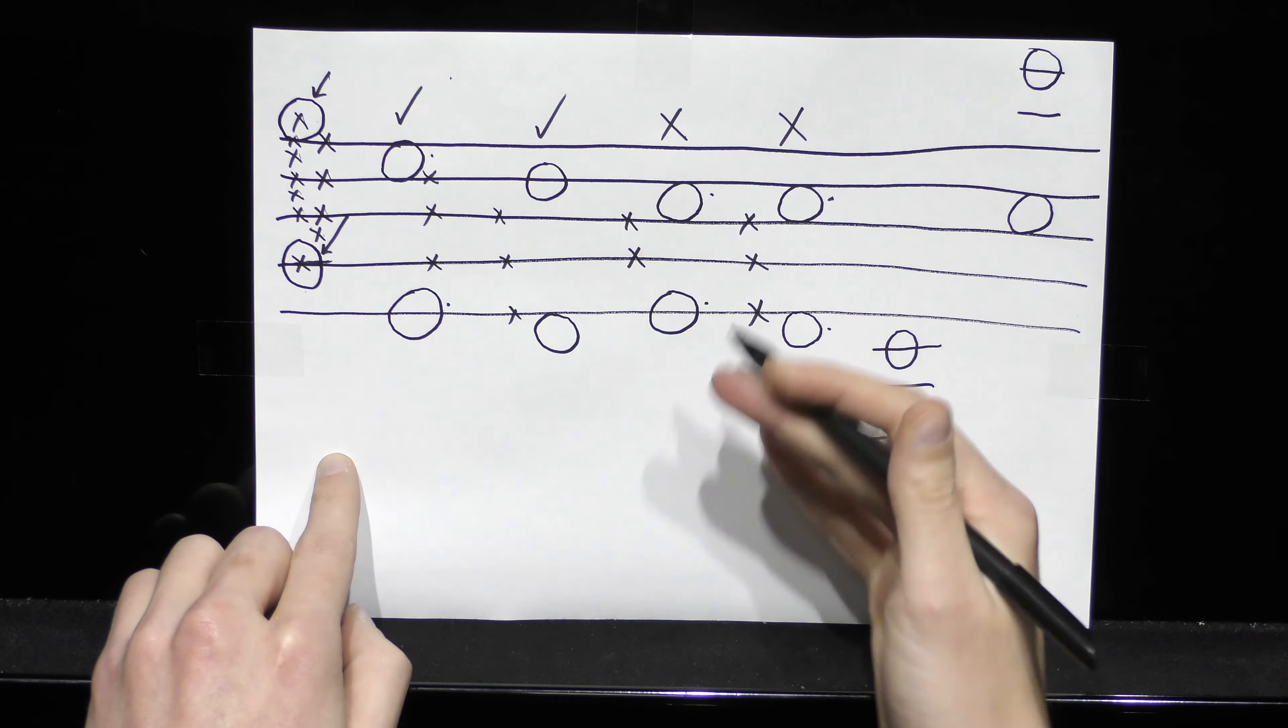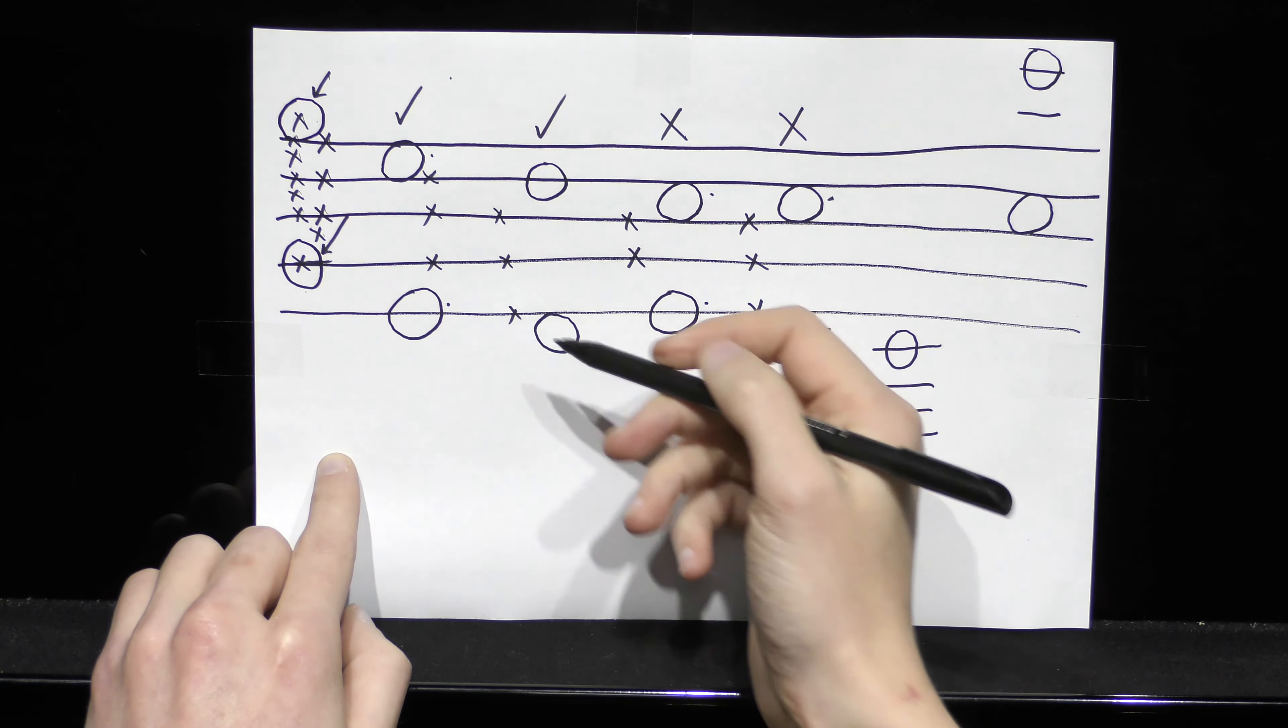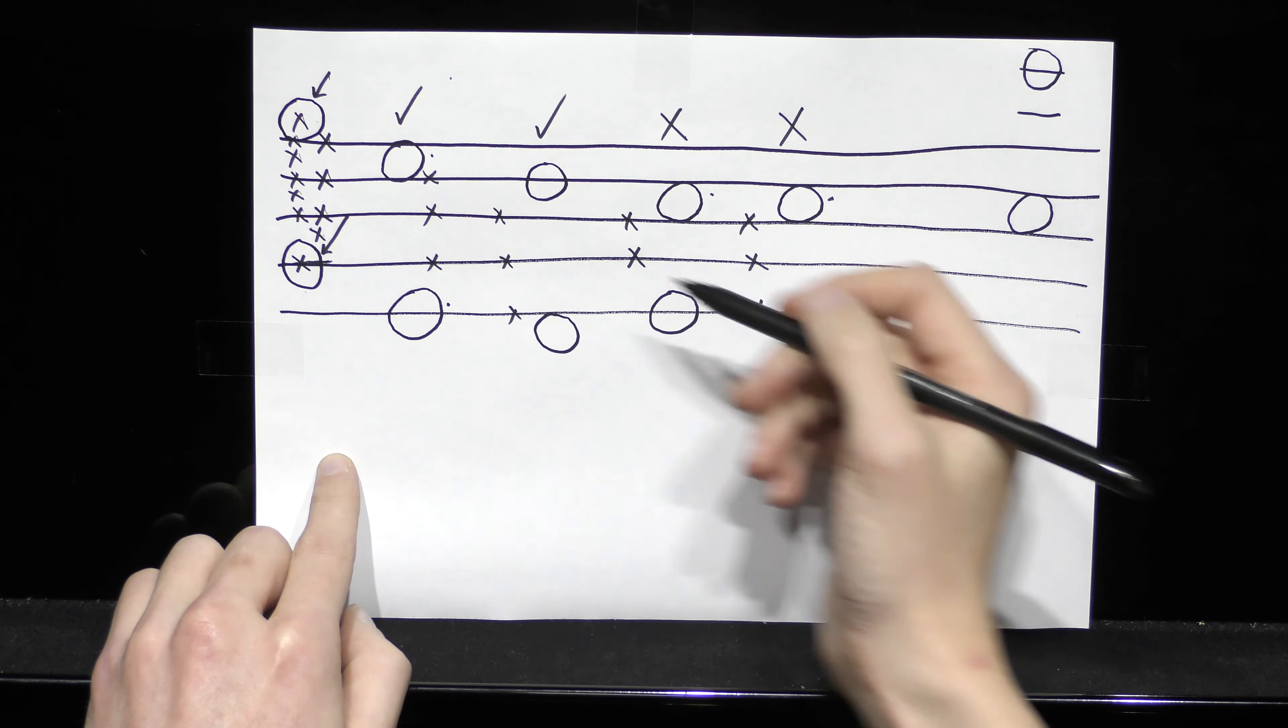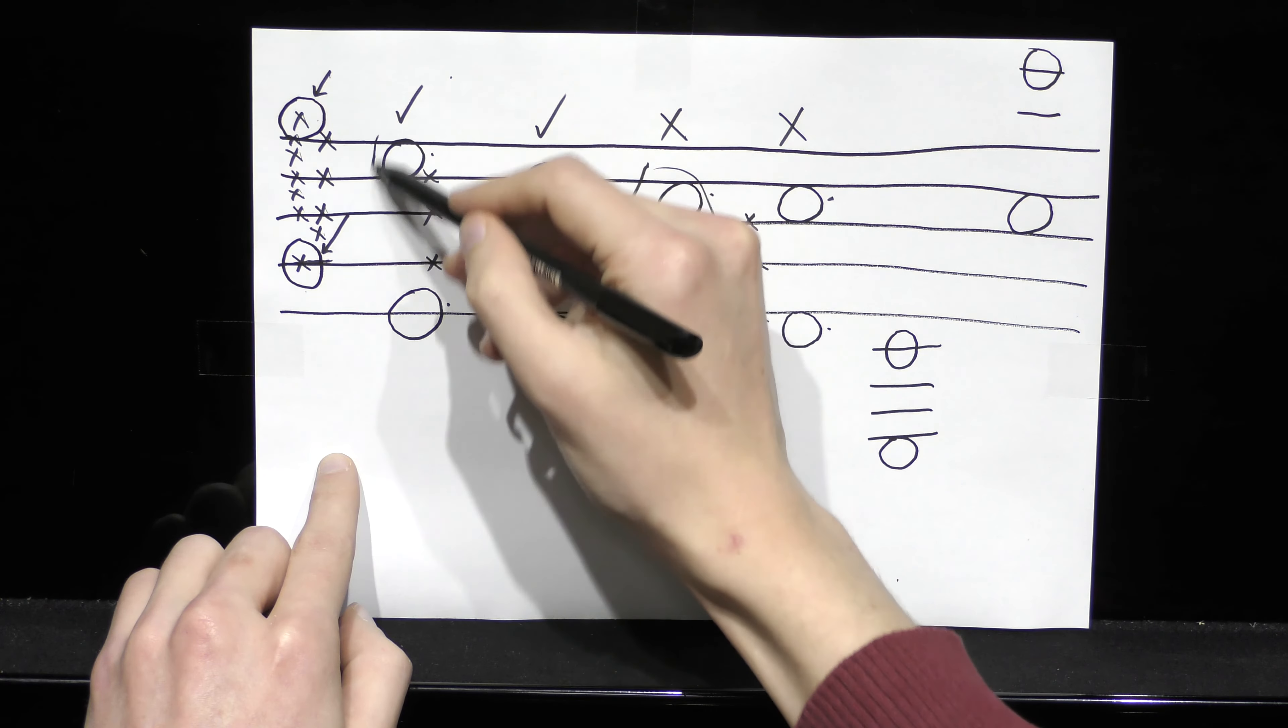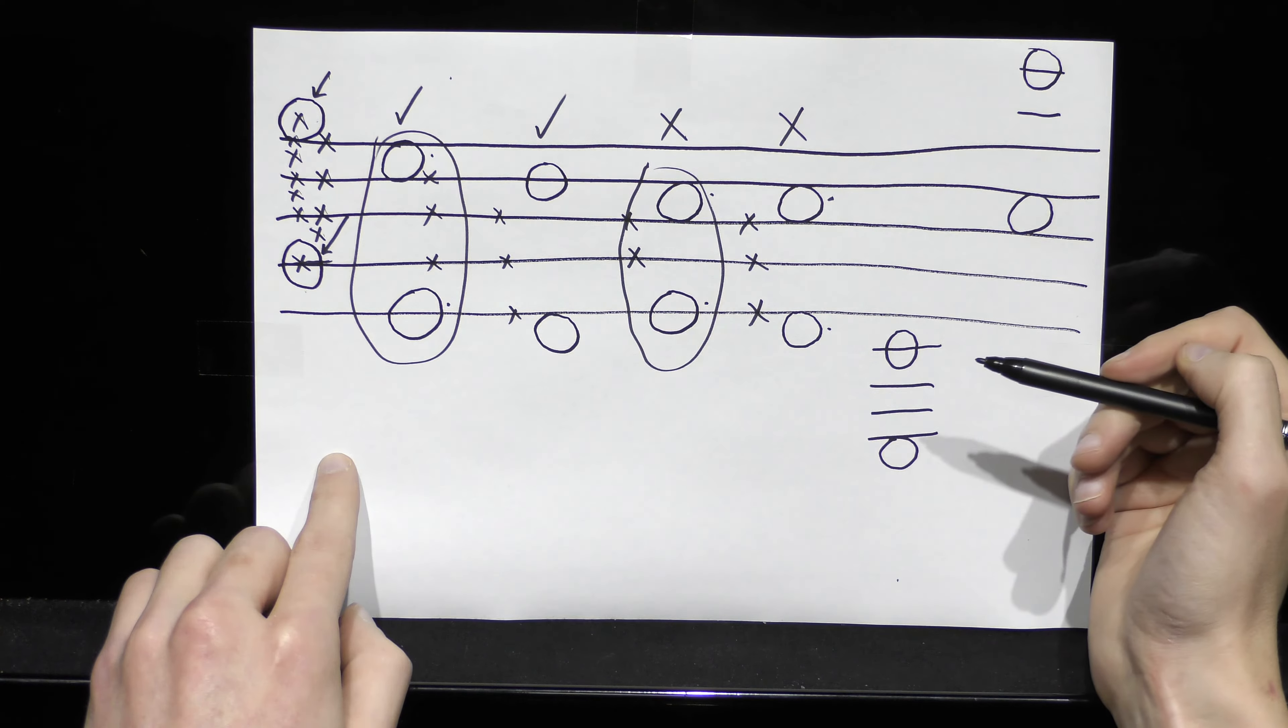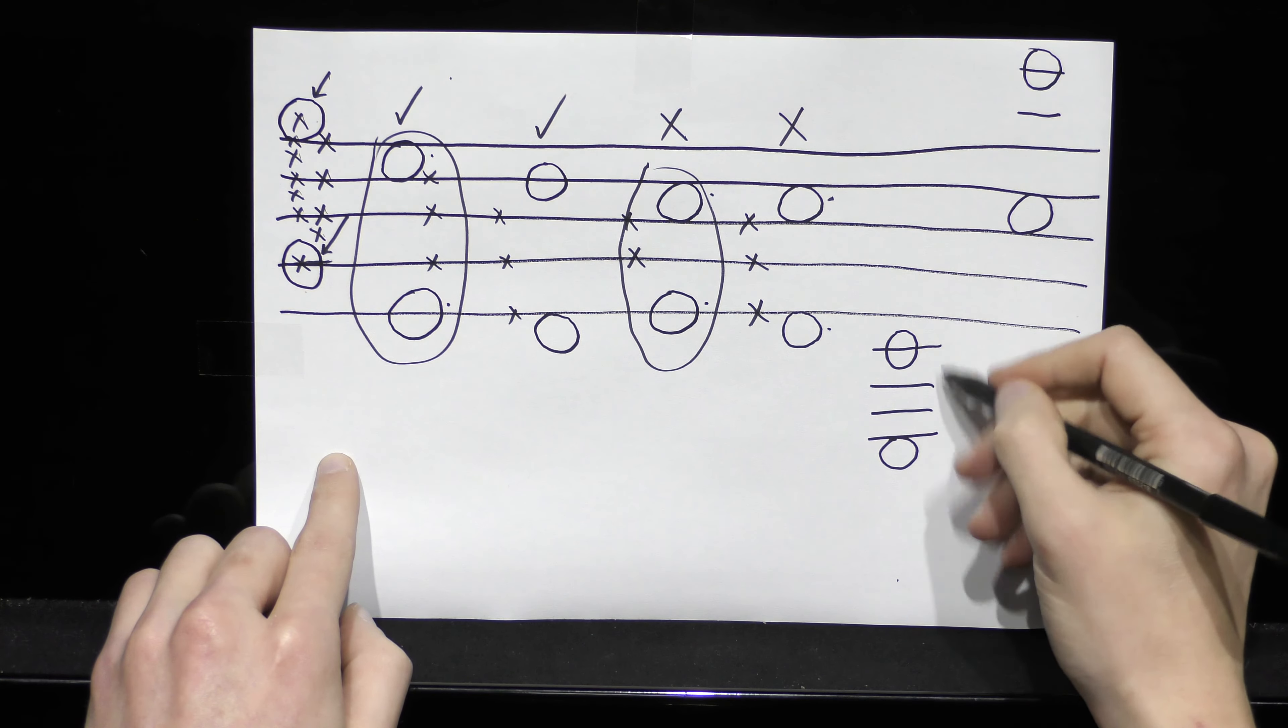And with time, you'll be able to see this at a glance. You don't actually have to count these three. You'll be able to recognize that this, for example, just looks too small to be an octave.